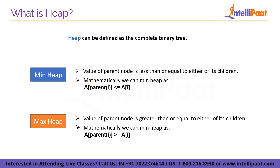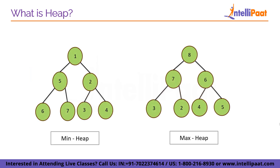Now we will try to understand min heap and max heap with a diagram. We can see that figure 1 is following the minimum heap property and figure 2 is following the maximum heap property. In the whole tree, 1 is minimum among all the nodes. Similarly, in the other tree, 8 is maximum among all the nodes. So both figures demonstrate the min heap and max heap properties respectively.